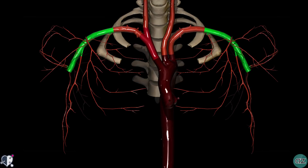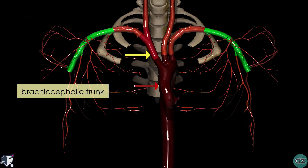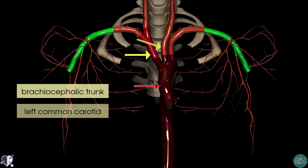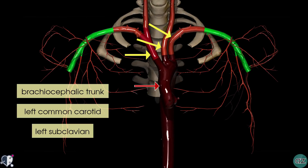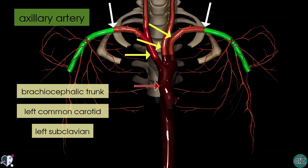What we're looking at here is the arch of the aorta with its three branches. You've got the brachiocephalic trunk, the left common carotid, and the left subclavian artery. As the subclavian arteries on either side cross the lateral edge of the first rib to enter the axilla, it becomes known as the axillary artery, which you can see here highlighted in green.